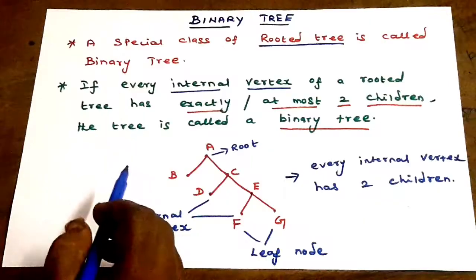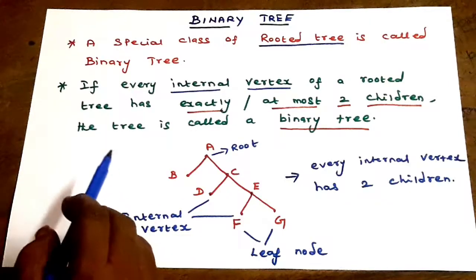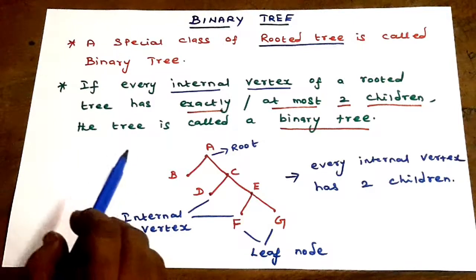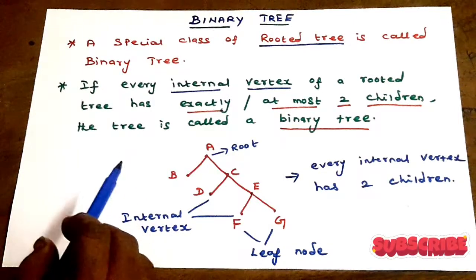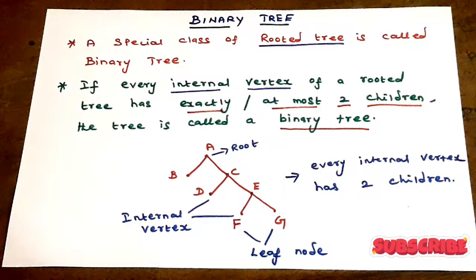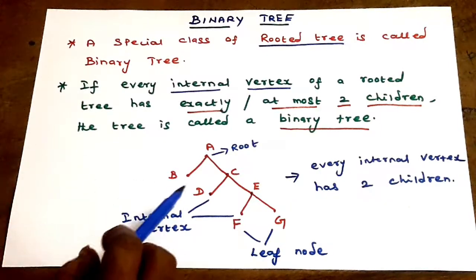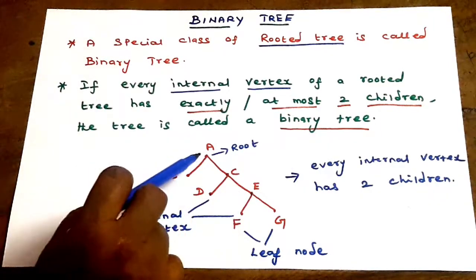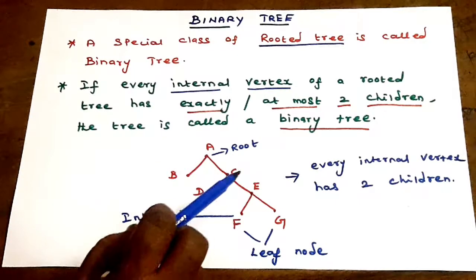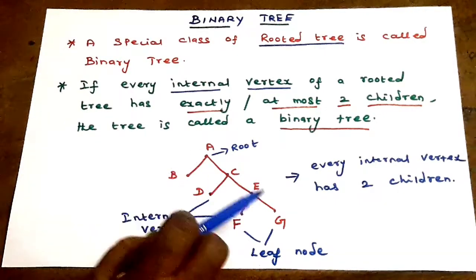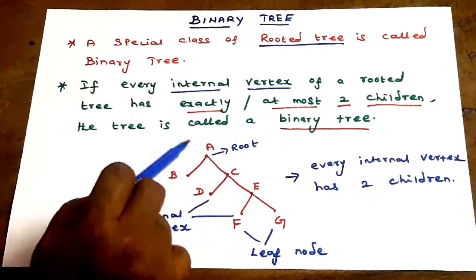Next, binary tree. A special class of rooted tree is called the binary tree. A binary tree is always a rooted tree, with one designated root vertex at the top.